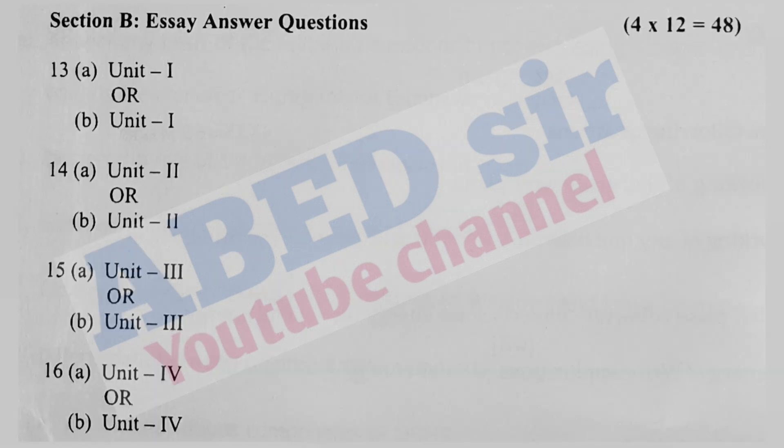Next, in Part B, four mutual choice questions will be asked. From each unit, two questions are there. Out of these two, you have to answer any one, and each one carries 12 marks. So 4 × 12 = 48 marks you will get from Part B. This 48 marks from Part B and 32 marks from Part A — total 80 marks paper is there for the semester exam.